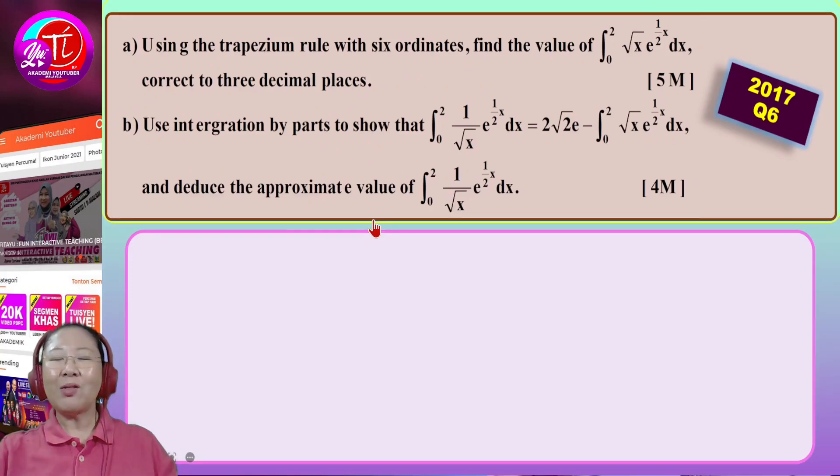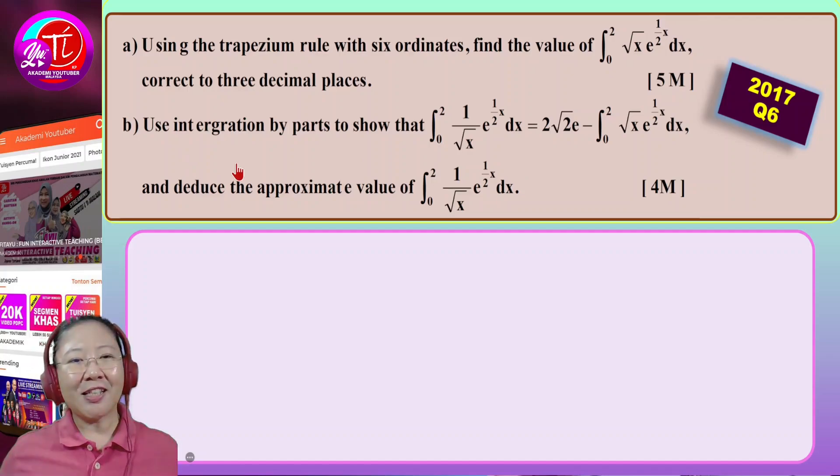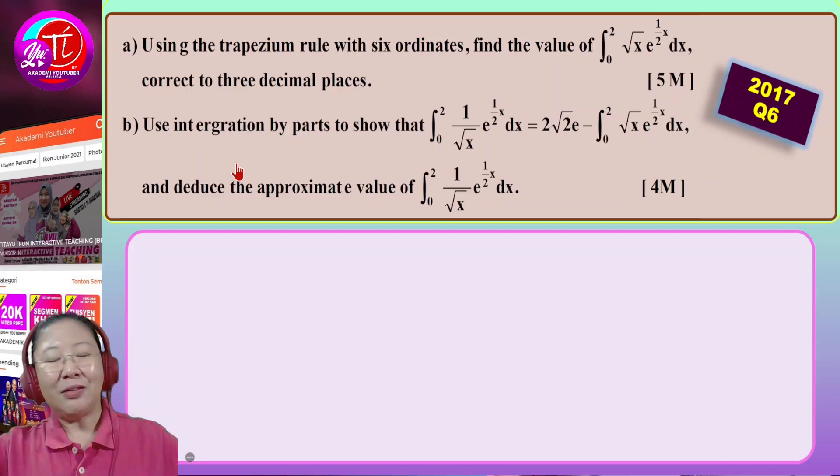So let's check out one of the questions over here. I'm using the year 2017 question because it has a special part over here where they ask you to show. I already discussed about Trapezium rules and some of the type of questions that will come out for Trapezium rule in my previous online class. If you have not seen it, I suggest you go and have a look at it. So let's read this question first. By using the Trapezium rule with six ordinates, this is what is given. Sometimes they will say six stripes and sometimes they will just give you the X. So here they say six ordinates.